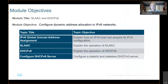First we'll talk about how we're going to configure dynamic address allocation in the IPv6 network. We'll talk about global unicast address assignment, and we'll explain how IPv6 hosts can acquire their IPv6 configuration.